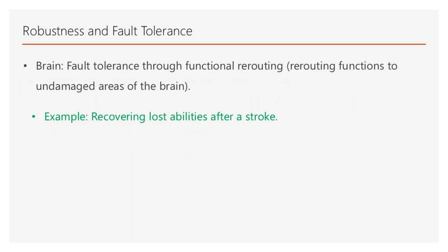The brain's fault tolerance is extraordinary. Even with damage, it can reroute functions to undamaged areas of the brain. We have witnessed many examples of this, such as individuals recovering lost abilities after a stroke. Neural networks exhibit some robustness to noise or missing data, but are less adaptive compared to the brain. Comparing the two systems, it is clear that the brain exhibits superior adaptability.